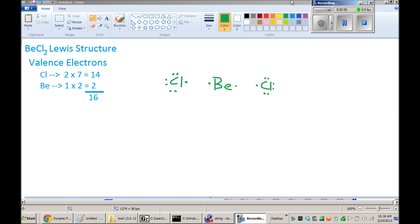We're then going to try to fill the octets of the chlorines. Beryllium is kind of an exception in that you can form stable molecules of beryllium without filling its octet. To be honest, it doesn't have a lot of electrons to start with, so it's not unlikely that it's just not going to have a completed octet.